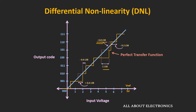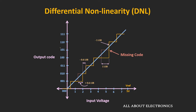As long as the DNL is less than ±1 LSB, there won't be any missing codes. If the step width becomes 0, the DNL would equal −1 LSB, and in that case, code 101 becomes a missing code — meaning for any input, we won't get that 101 code. So while selecting the ADC, one should verify there is no missing code. As long as the DNL of the ADC is less than ±1 LSB, there won't be any missing codes.